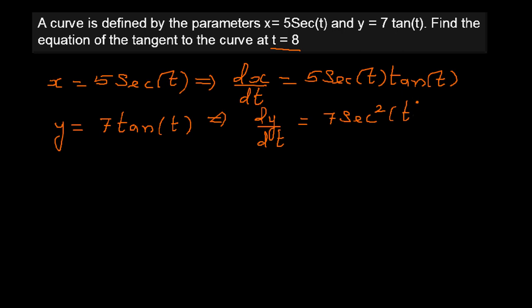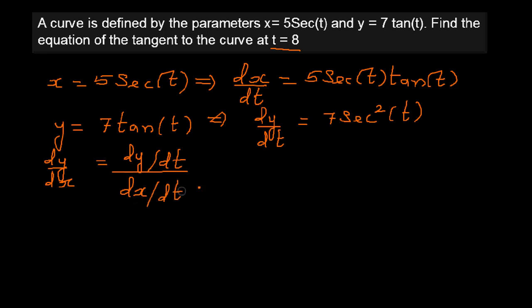Now we want to find dy/dx. We can say dy/dx = dy/dt divided by dx/dt. Substituting, dy/dt is 7 sec²t divided by 5 sec t · tan t.